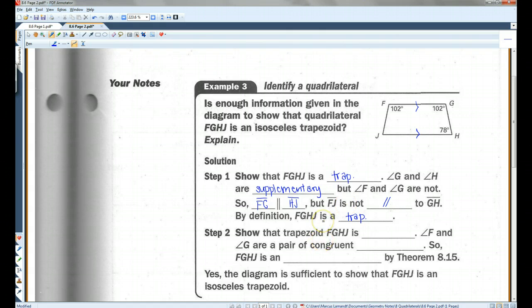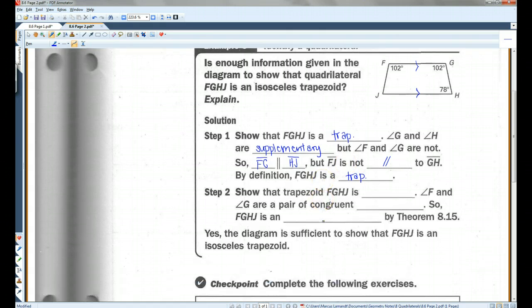Now we need to show that it is an isosceles trapezoid, if we can. Show that trapezoid FGHJ is isosceles. That's what we're going to try to do. Angle F and angle G are a pair of congruent base angles. Now, if you remember, if you have one pair of congruent base angles, you automatically know that it's an isosceles trapezoid.